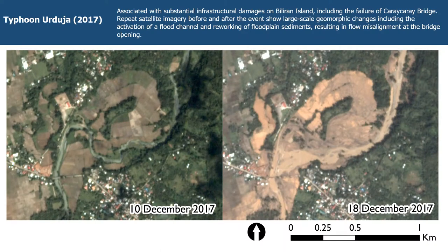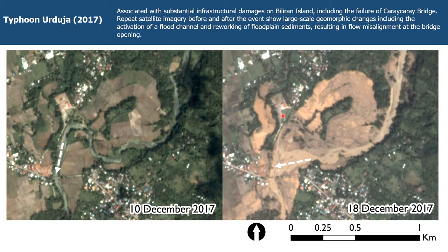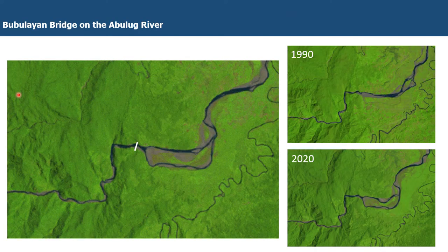At the event scale we can examine river migration hazards. Here we show the Karakai bridge on Biliran Island, with a before image from December 10th, 2017, and a post-event image from December 18th, 2017, associated with Typhoon Urduja. We see really large-scale geomorphic changes, including the activation of a flood channel and reworking of floodplain sediments. The channel moved out of bank, eroded a large area of the floodplain, and really changed the angle of flow attack at the bridge, with large-scale flow misalignment at the bridge opening.